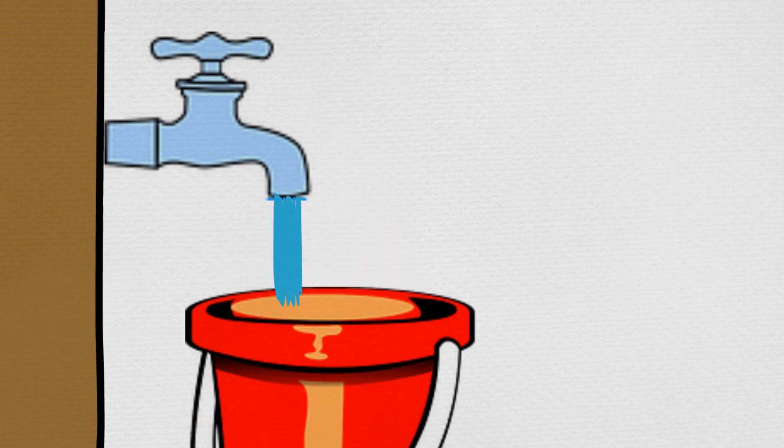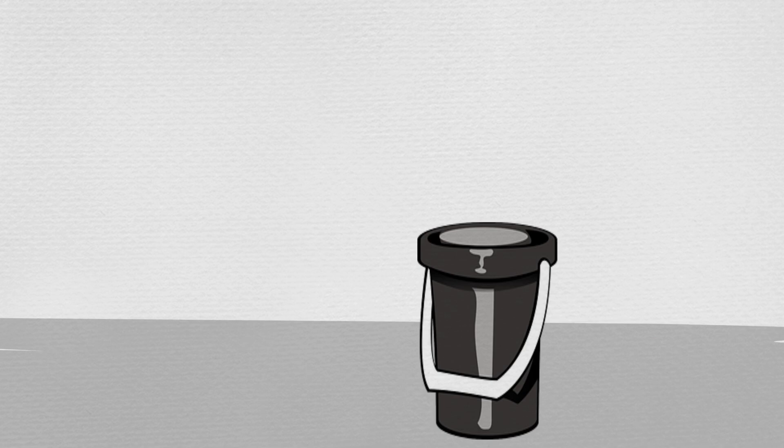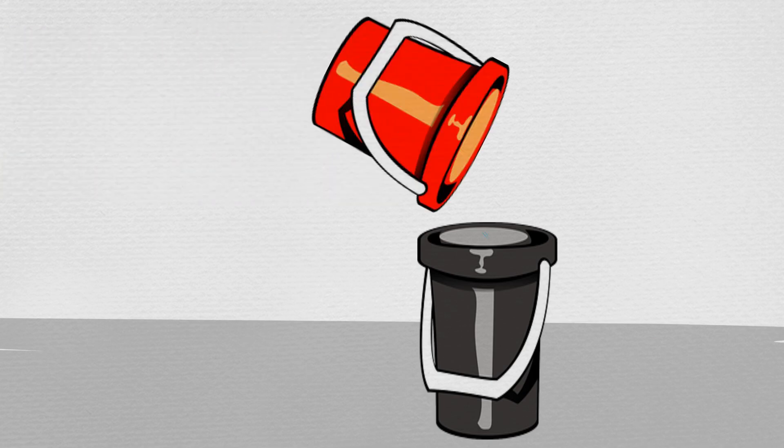So they poured more water from the tap into the orange bucket until it was full to the top again. Max poured this water from the orange bucket into the black bucket. This time, all the water in the orange bucket poured out until it was completely empty, and the black bucket was now completely full to the top.